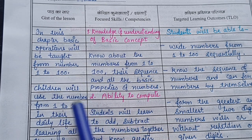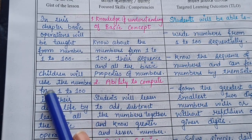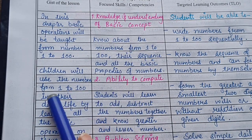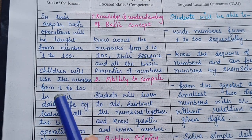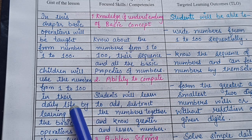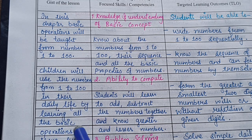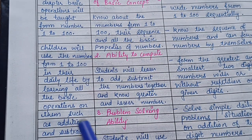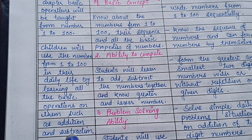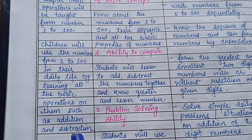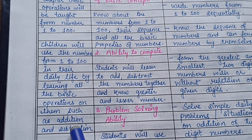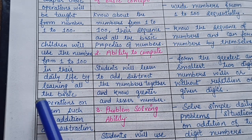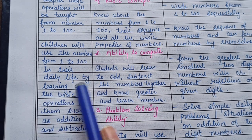Children will use the numbers from 1 to 100 in their daily life by learning all the basic operations on them, such as addition and subtraction. So the children will learn everything about the numbers 1 to 100.